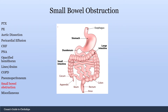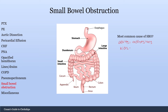Moving on to small bowel obstruction. I know this isn't chest x-ray anymore, but I just wanted to do a couple x-rays of the abdomen as well, because they're pretty high yield. So with small bowel obstruction, you have an obstruction, and everything proximal to this obstruction is going to dilate, while everything past this obstruction is going to be collapsed. The number one cause in adults is adhesions from surgery, and the number one cause in kids, who generally have not had many surgeries, would be a hernia.